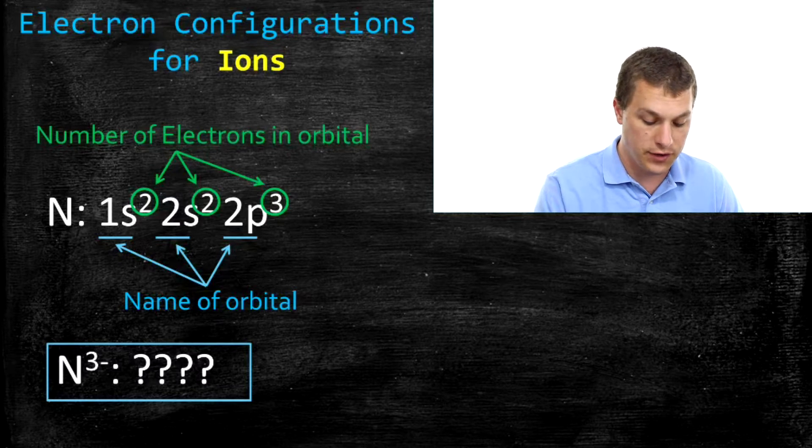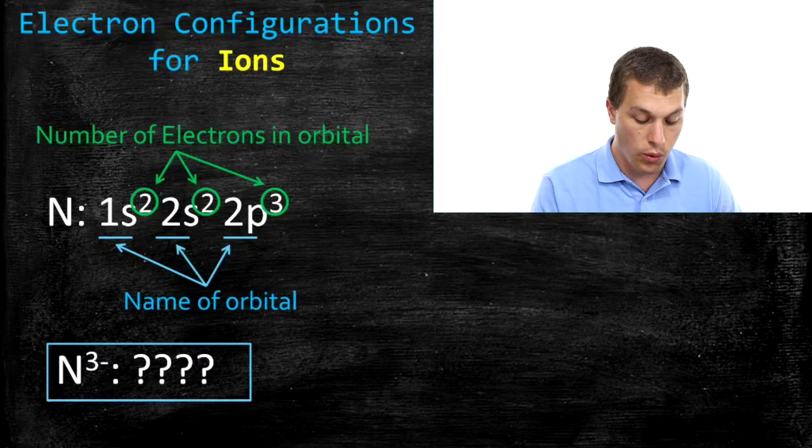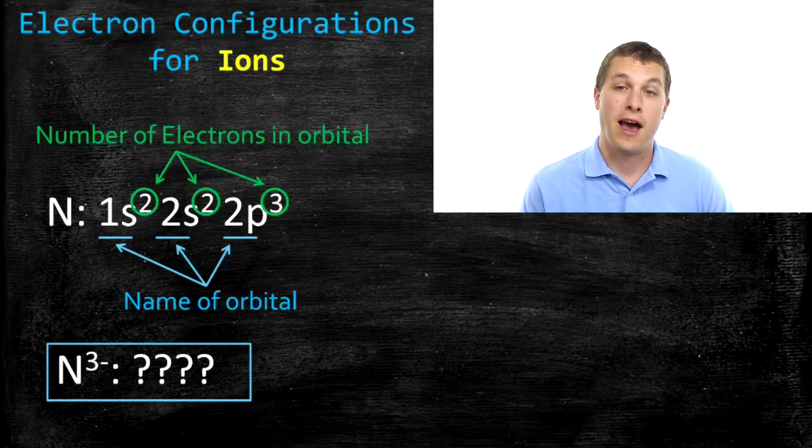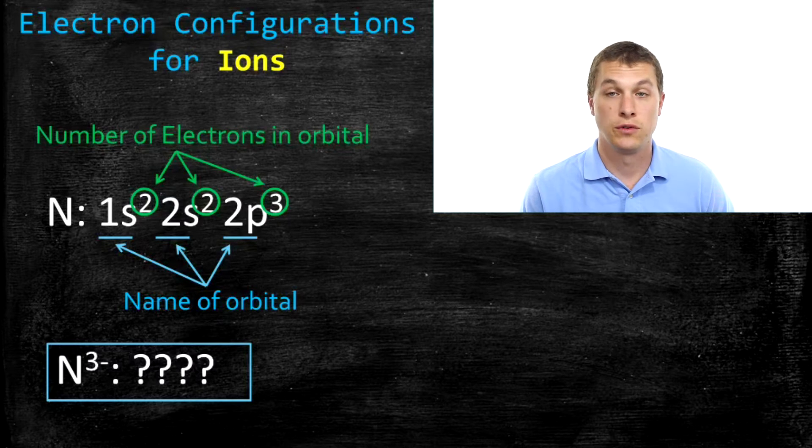So below you see the electron configuration for nitrogen, 1s2, 2s2, 2p3. And what that's basically telling us is how many electrons go in each one of those types of orbitals.